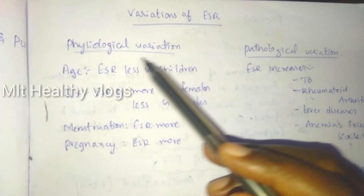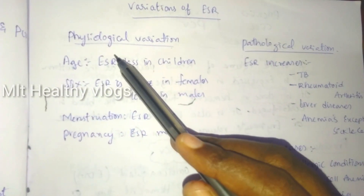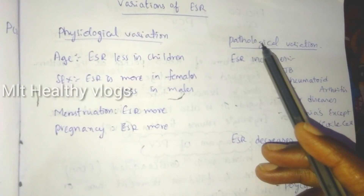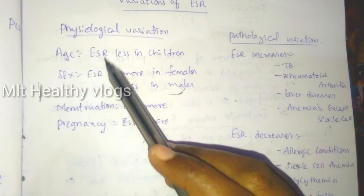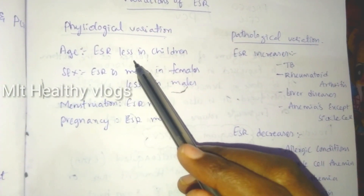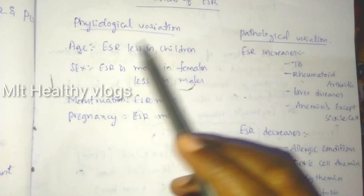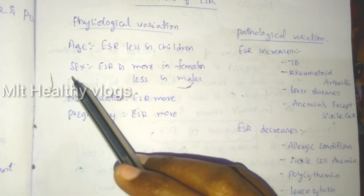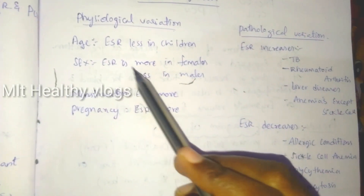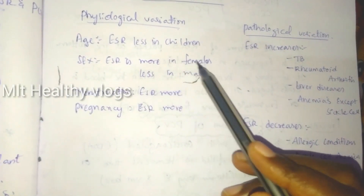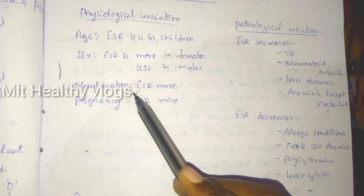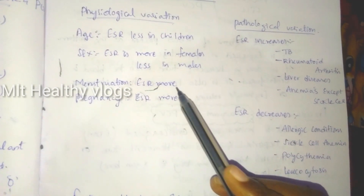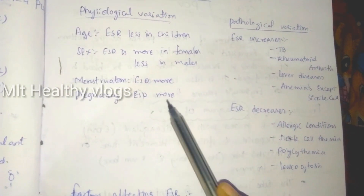Variations of ESR include physiological and pathological variations. Physiological variations: Age — ESR is less in children. Sex — ESR is more in females, less in males. Menstruation — ESR is more. Pregnancy — ESR is more.